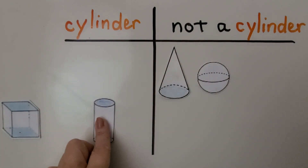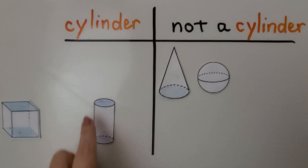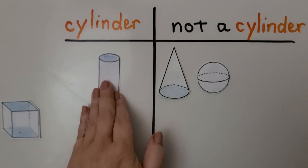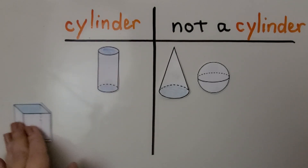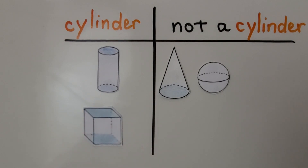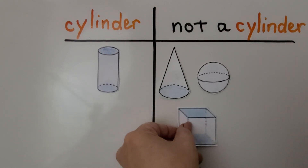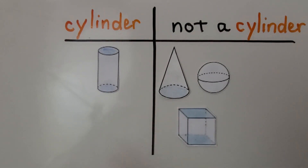Is this a cylinder? I see one, two flat surfaces, and it's got a curved surface. If you said that's a cylinder, you're right. Is this a cylinder? I see all flat surfaces — there's no curves. That's not a cylinder, that's a cube. We can put it over here. We have cylinder and not a cylinder.